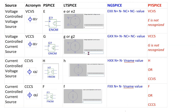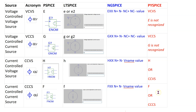It is quite instructive to compare the valid dependent source netlist names in PSpice, LTSpice, NGSpice, and PySpice. In the PySpice netlist, we can use H and F for the two current-controlled sources, but we cannot use E and G for the two voltage-controlled sources, as these two labels are not defined in the PySpice netlist. Thus, we must use the full acronyms VCVS and VCCS. For the two current-controlled sources, we can either use H or CCVS, and F or CCCS. Please pause the video and make a note of the valid PySpice netlist names for the four dependent sources.